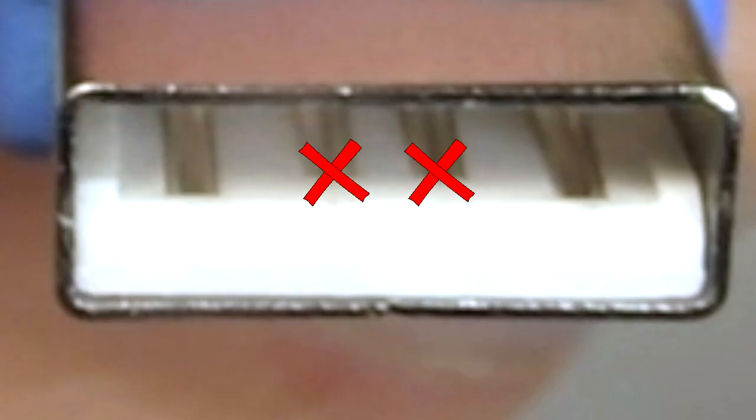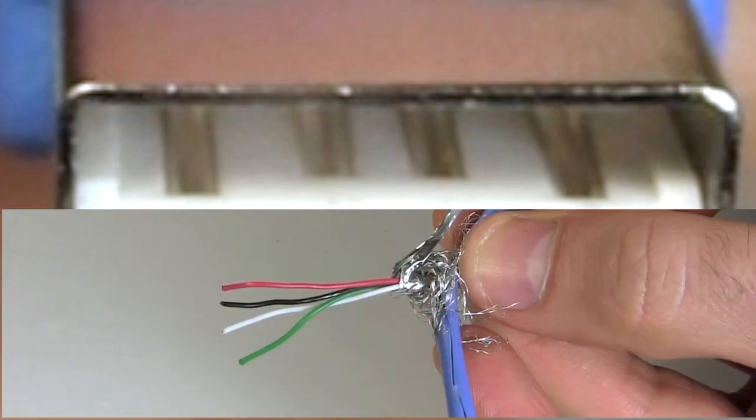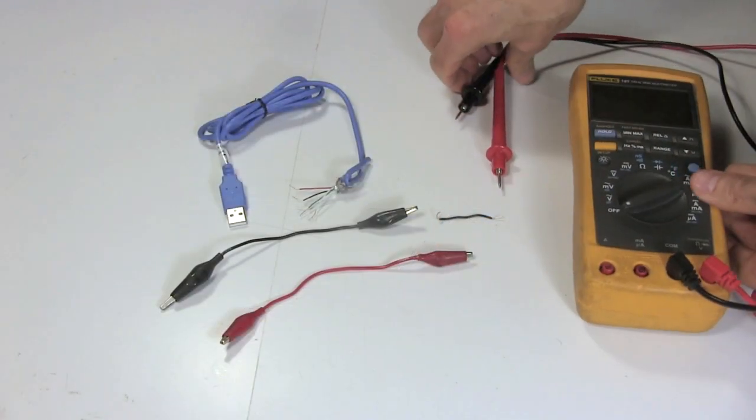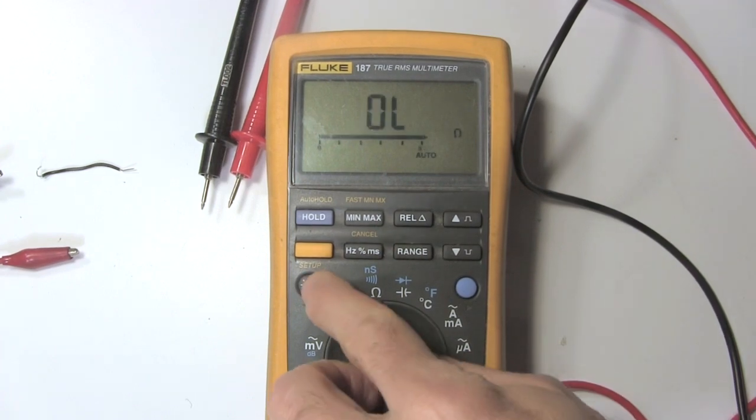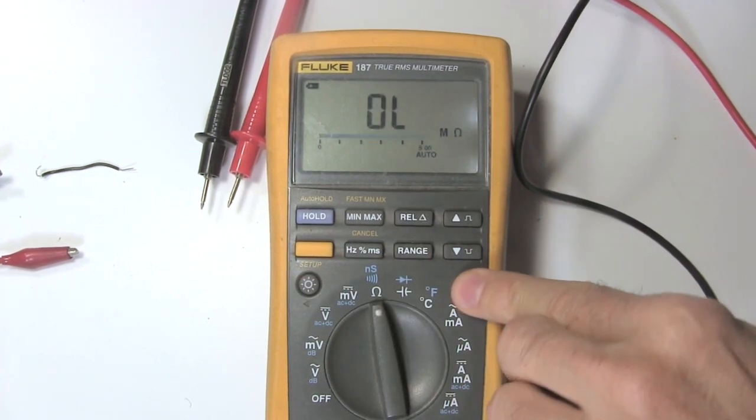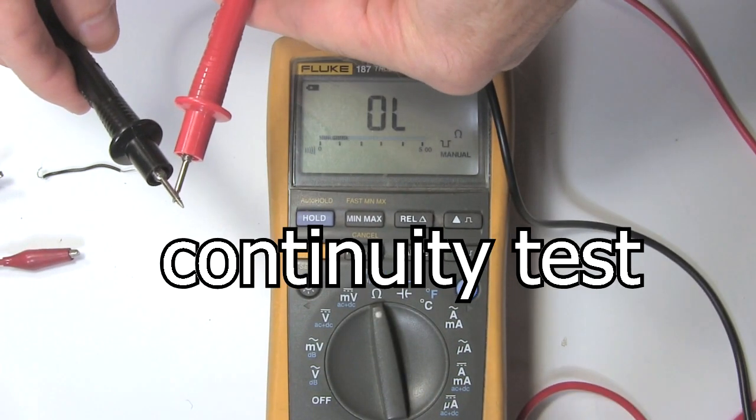But we're not using the data pins. We can prove that the power pins go to the black and red wires by using a multimeter. I put it on the resistance scale and push the button that makes it beep when the resistance is low enough. That's called a continuity test.